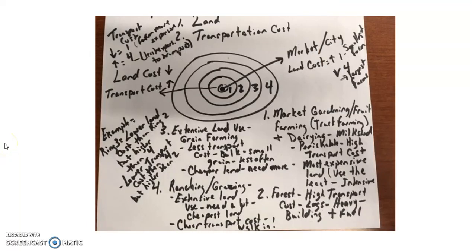All right guys, here we are for our second part of this Von Thünen tuning video. Let's finish up this part of the lesson — remember you should be taking notes. Here is our model, the Von Thünen model. In the model, we assume two costs are the most important when we're talking about minimizing cost in order to maximize profit: land cost and transportation costs.